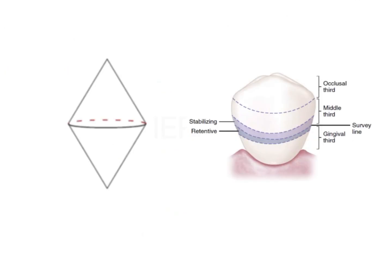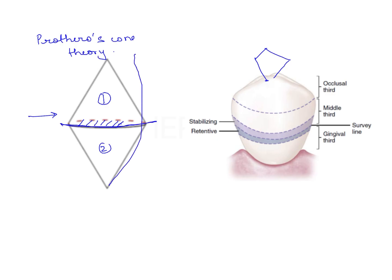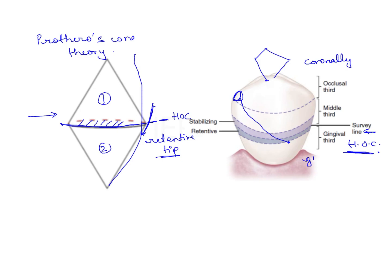Looking at Prothero's cone theory, it is believed that a tooth has inclines similar to two cones connected to each other by a base — the tooth is conical in shape. The highest contour is the bulkiest portion. You want to get retention from under this portion, so the retentive arm or retentive tip should cross the height of contour or the highest point of bulk. This is the survey line that shows the height of contour. For an extracoronal retainer, the tip of the retentive arm must cross this height of contour to engage the undercut and provide retention.